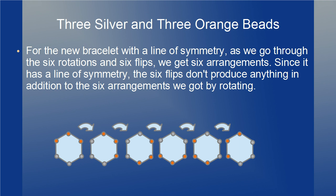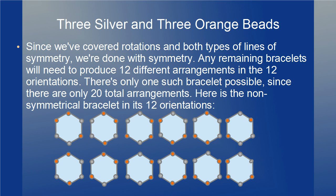For the new bracelet with a line of symmetry, as we go through the 6 rotations and 6 flips, we get only 6 arrangements. Since it has a line of symmetry, the 6 flips don't produce anything in addition to the 6 arrangements we already got by rotating. Since we've covered rotations and both types of lines of symmetry, any remaining bracelets will need to produce 12 different arrangements in the 12 orientations. There's only one such bracelet possible since there are only 20 arrangements. Here's the non-symmetrical bracelet in its 12 orientations.